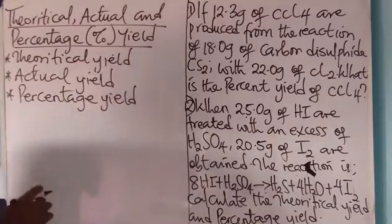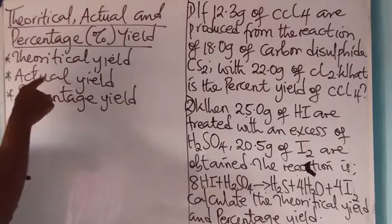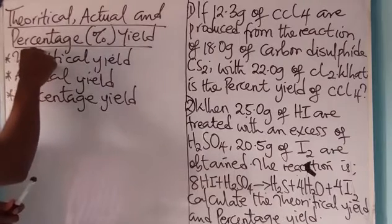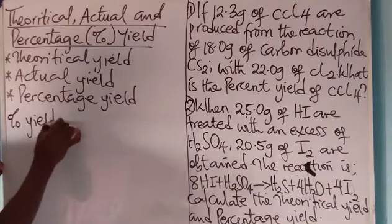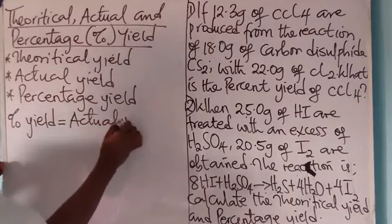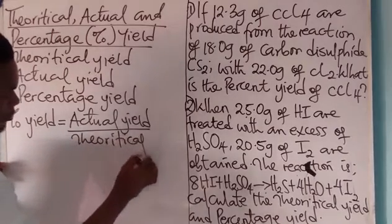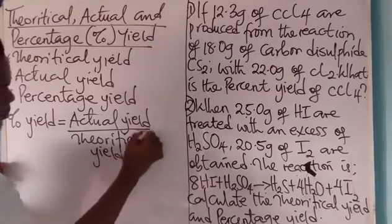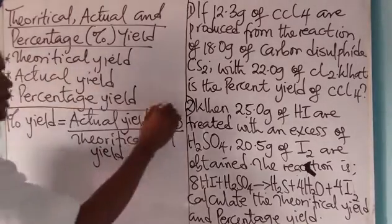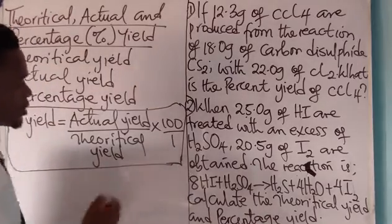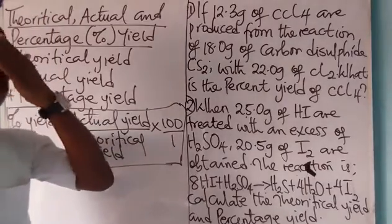Then we have the third one: percentage yield. Whenever you hear the word percentage, 100% comes to mind. The percentage yield is the ratio of the actual yield to the theoretical yield, multiplied by 100. So the formula is: percentage yield = (actual yield / theoretical yield) × 100. To calculate the percentage yield, you must first have calculated both the theoretical and actual yields.